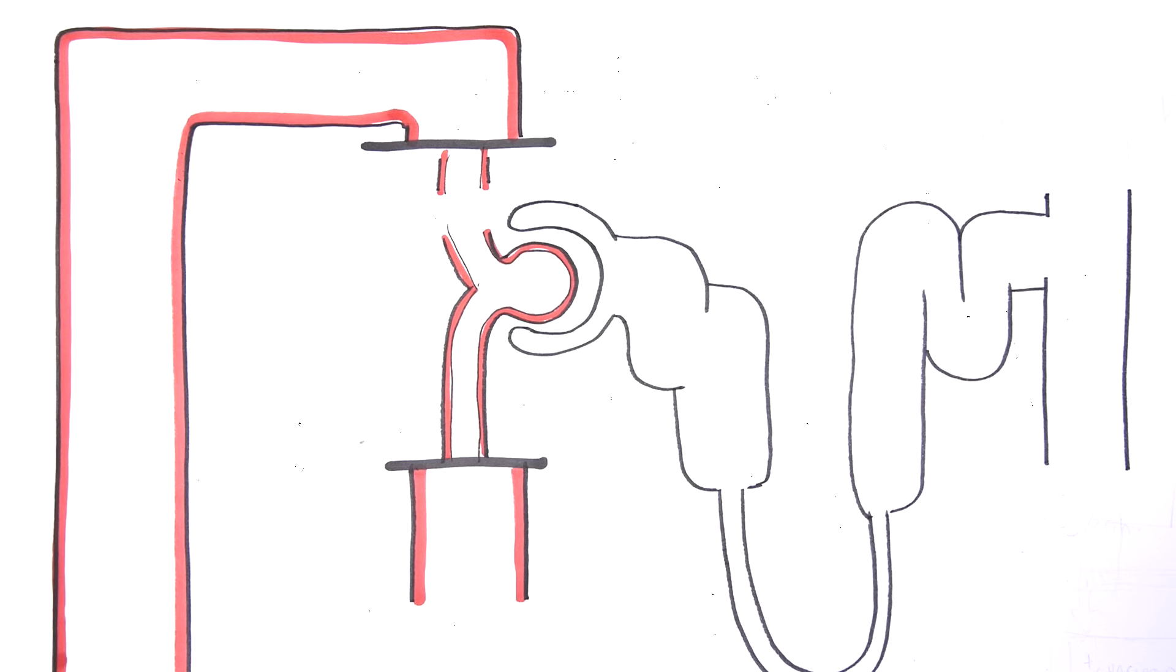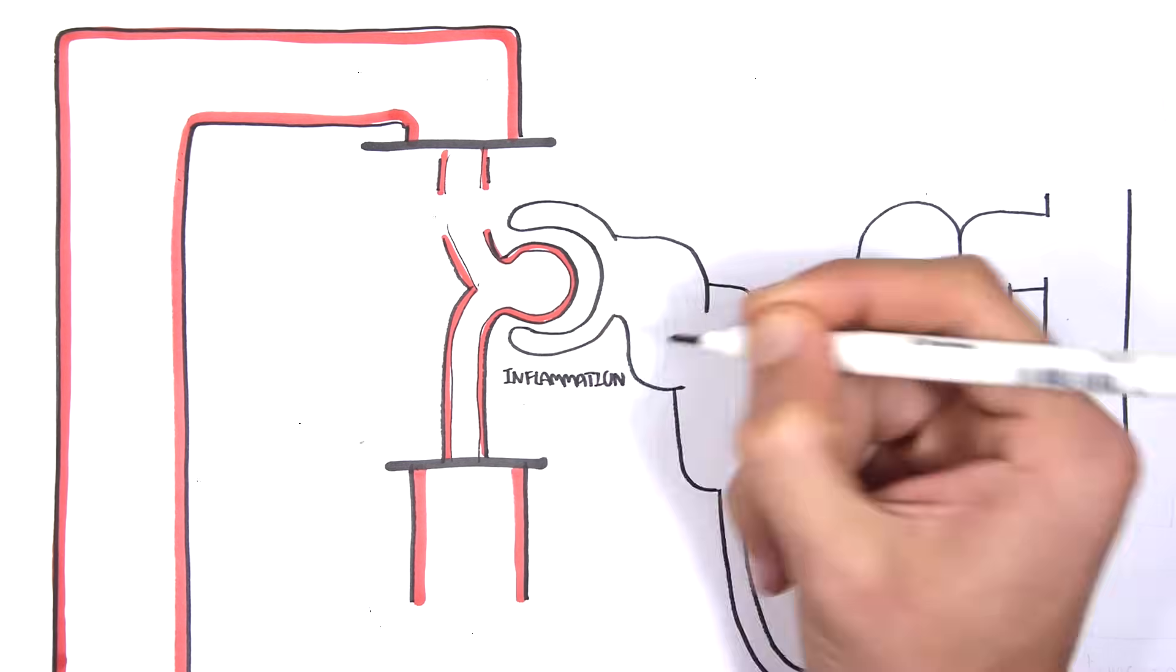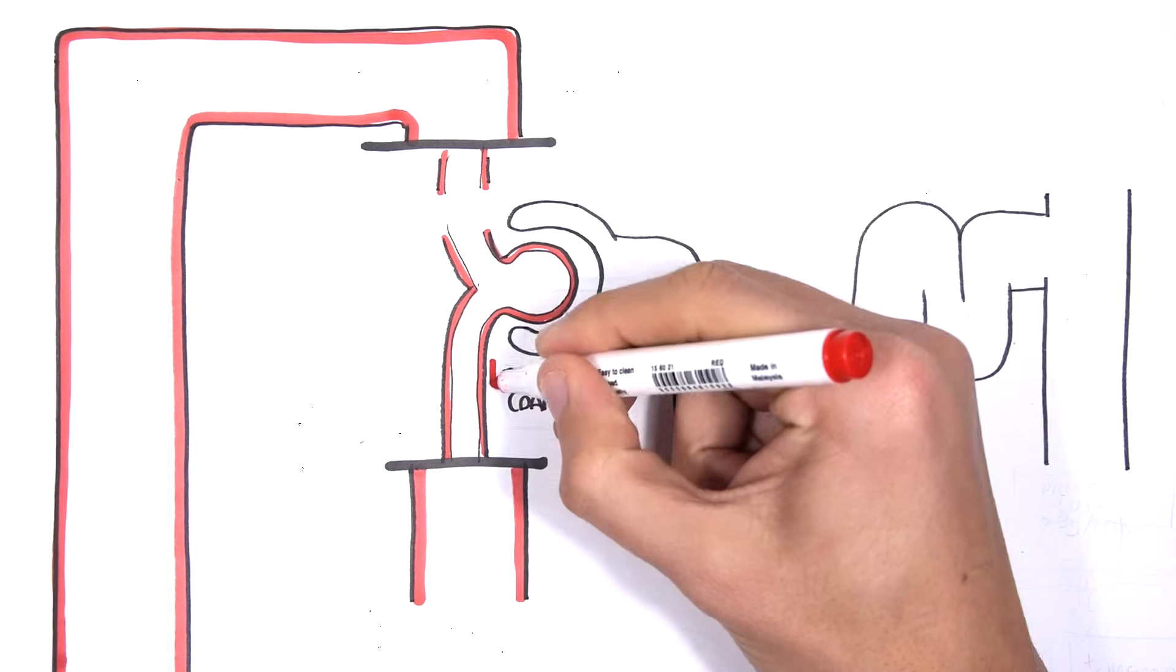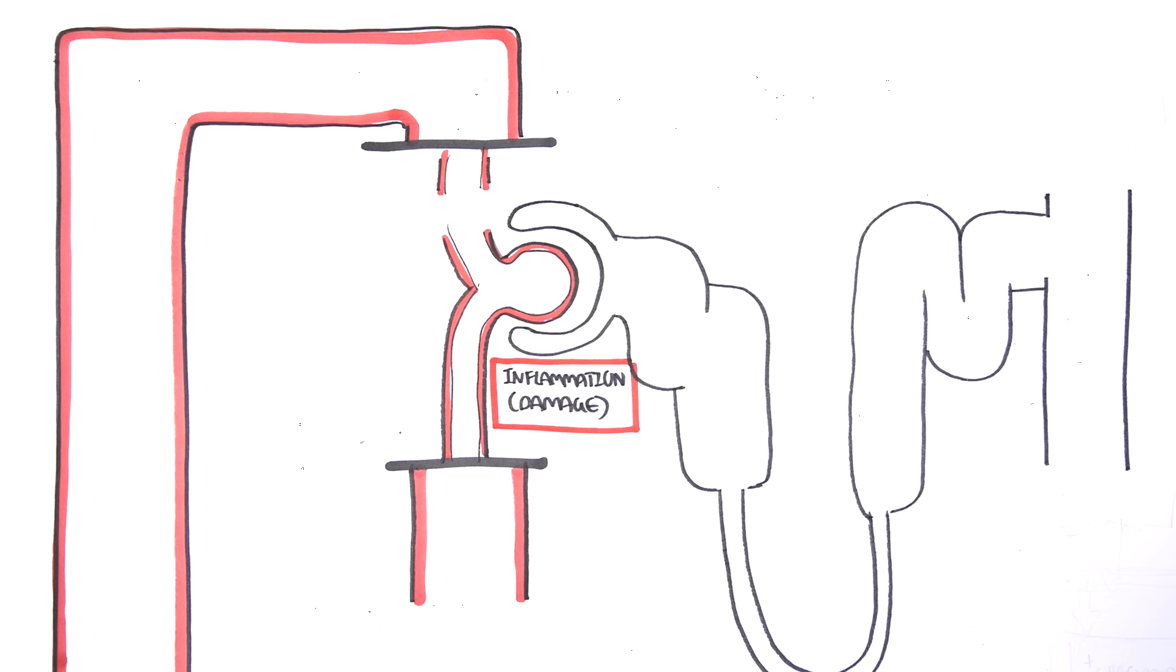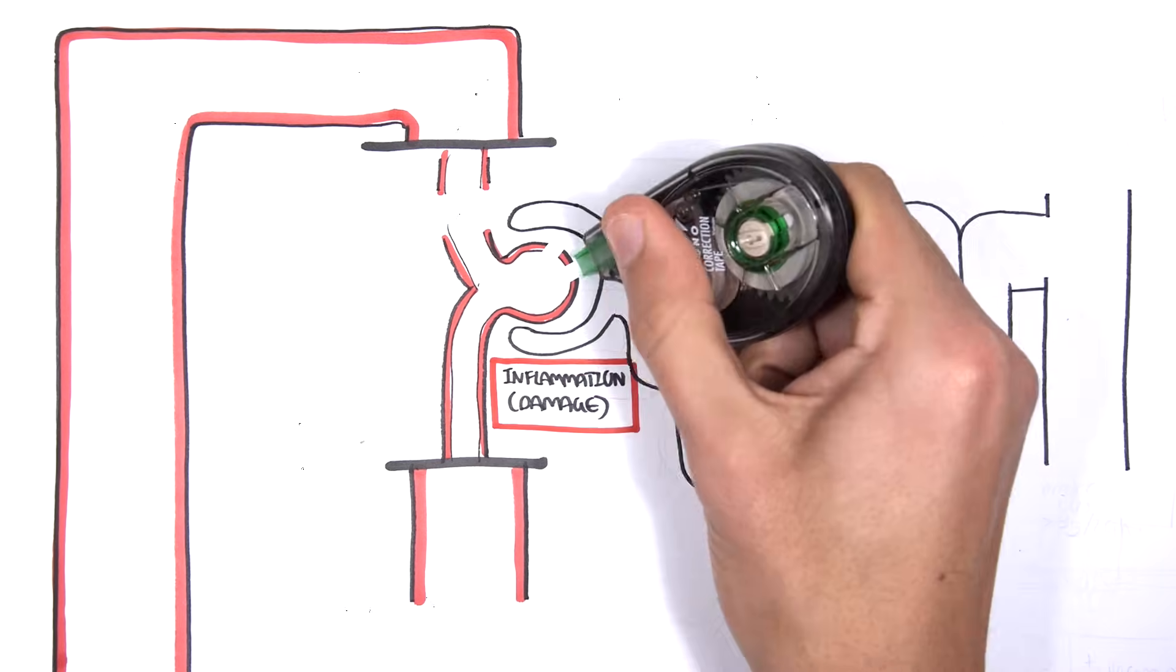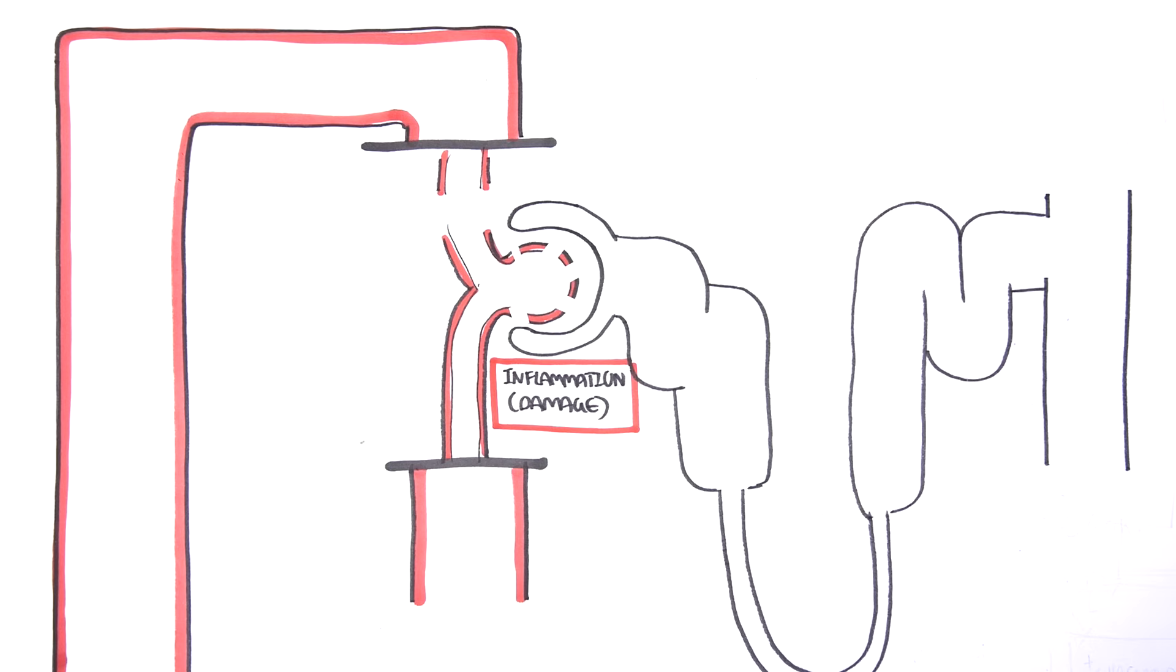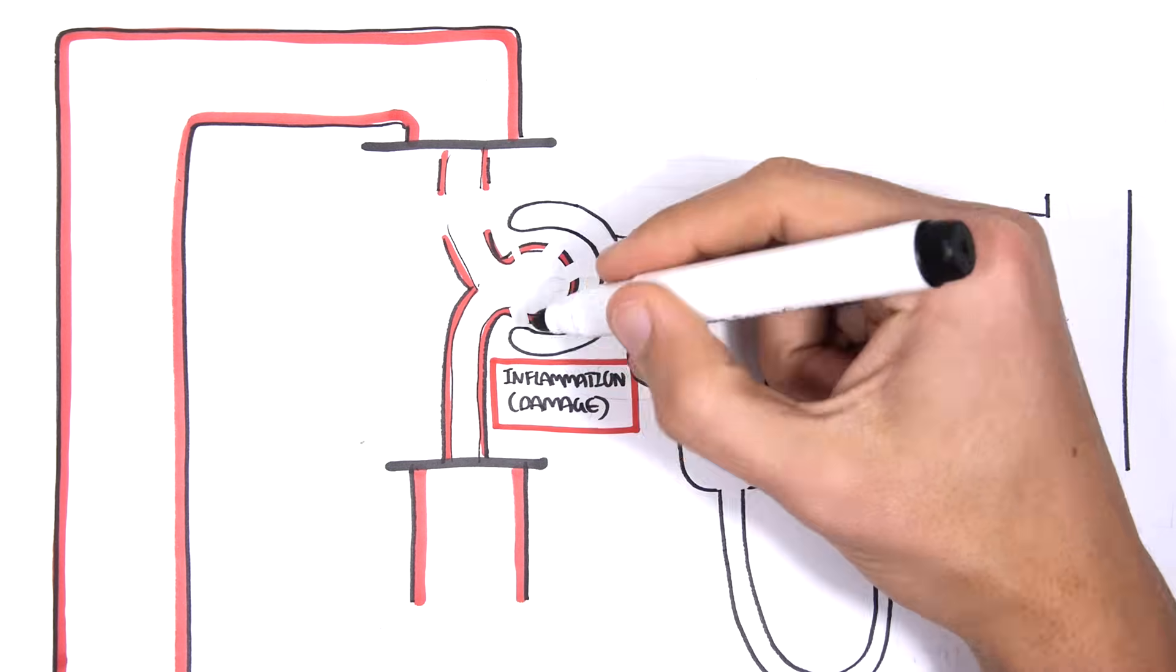In nephrotic syndrome, for many reasons which won't be discussed in detail here, there is inflammation and damage to the glomerulus. This inflammation can be from immune cells, antibodies, complement proteins, immune complexes, hypertension, and sclerosis. It results in damage specifically to cells called podocytes, which normally help prevent protein loss.